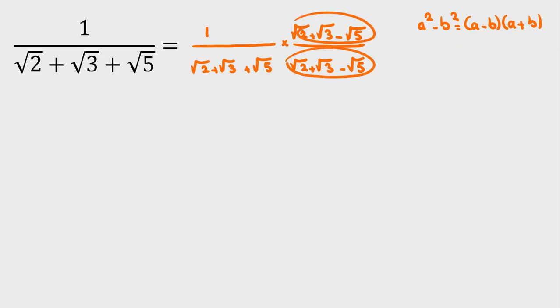And because we say this over this, it is 1, so it has no effect on our main fraction. Now, let's get it. The numerator is obvious. It is root 2 plus root 3 minus root 5. But the denominator, by applying this identity, it will be root 2 plus root 3 squared minus root 5 squared.